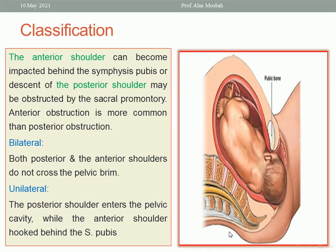We can classify shoulder dystocia into bilateral or unilateral. If both shoulders are affected, it is bilateral. If one shoulder — commonly the anterior one — it is called unilateral. Of course, the more severe condition is the bilateral one. The anterior shoulder is impacted behind or above the symphysis pubis, and the posterior shoulder, if affected, is impacted at the sacral promontory.